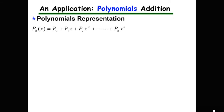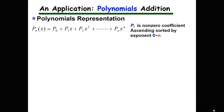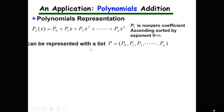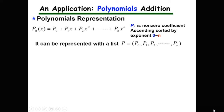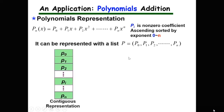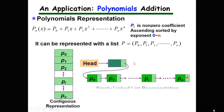First, the representation of a polynomial. Usually a polynomial can be expressed with this expression, where pi is the non-zero coefficient for each term and items are in ascending sorted order by exponent. Exponents vary from 0 to n. Such a polynomial can be represented with a list using contiguous or singly linked representation. The size of the list is n plus 1.